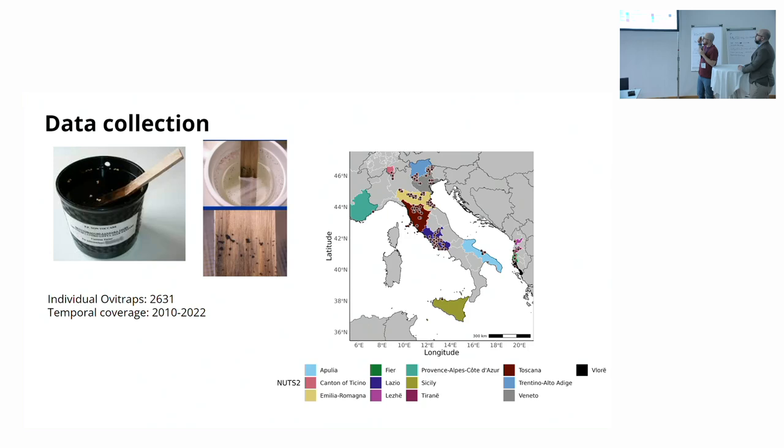First, I have to talk about the data collection. We contact several stakeholders around Italy, Albania, France and Switzerland, and we start collecting raw Ovi traps observations. Ovi traps are these buckets, plastic buckets, a pot filled with water, and you put this stick inside. Essentially, female mosquitoes, when they look for a place where to deposit eggs, they look for breeding sites with water, and they land on the sticks and they deposit the eggs. After a certain amount of time, usually every week or two weeks, an operator passes by, collects the stick, changes the stick, and counts the single eggs. This gave us a sort of index of population dynamics.